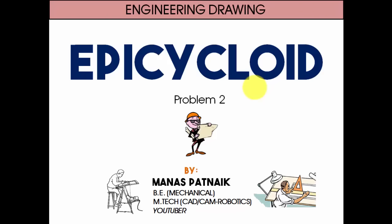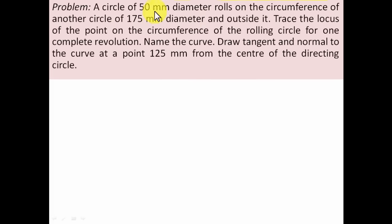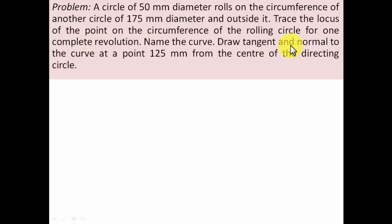The problem goes like this: a circle of 50 mm diameter rolls on the circumference of another circle of 175 mm diameter and outside it. Trace the locus of a point on the circumference of the rolling circle for one complete revolution, name the curve, draw a tangent and normal to the curve at a point 125 mm from the center of the directing circle.